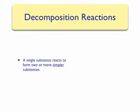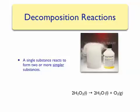The second type of reaction is a decomposition reaction. It is literally the opposite of what happens in a combination reaction — that is, a single substance that is usually complex reacts to form two or more simpler substances. A good and interesting example is the decomposition of hydrogen peroxide, which forms water and oxygen gas.